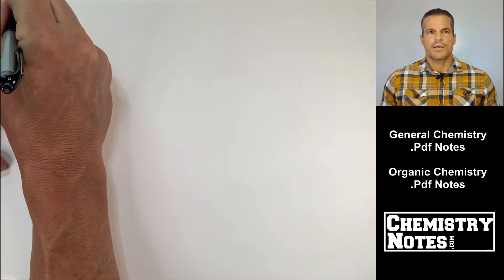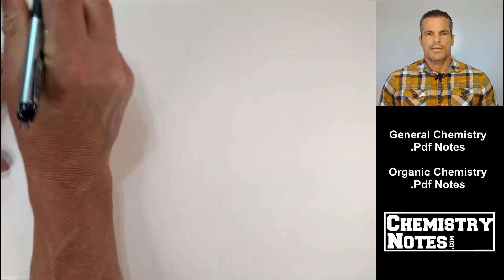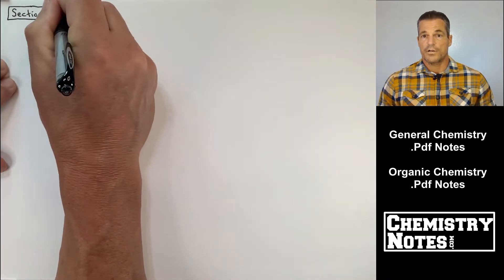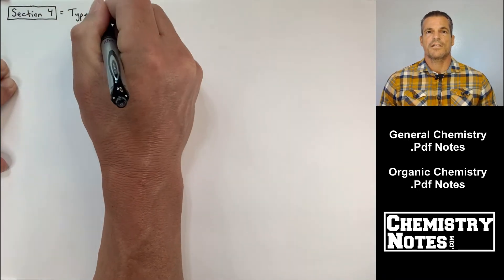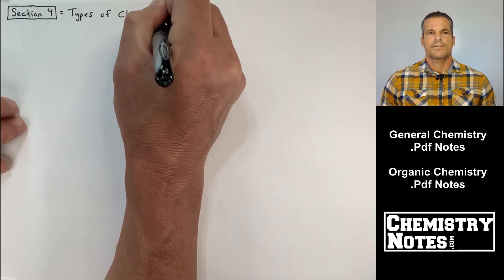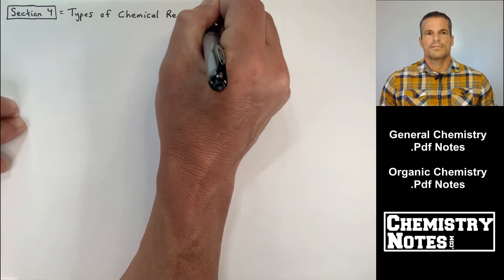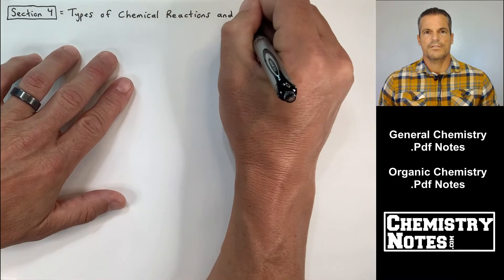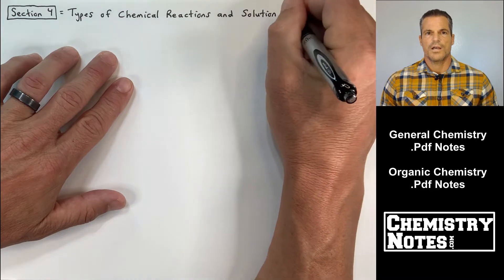Hi everybody, Justin here from chemistrynotes.com and today we are going to start a new section. This is section four. Section four is titled types of chemical reactions and solution stoichiometry.